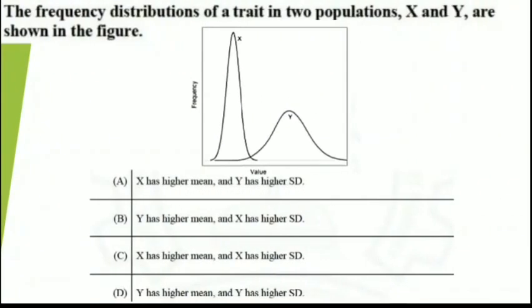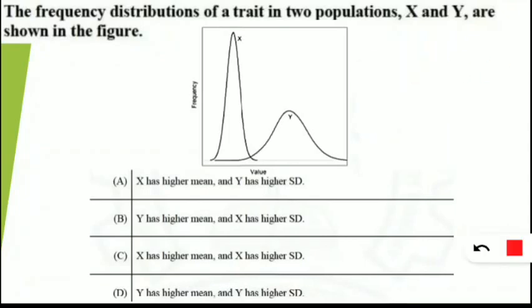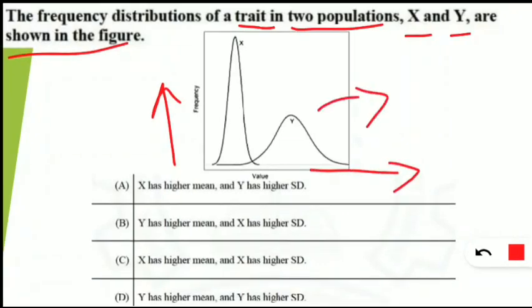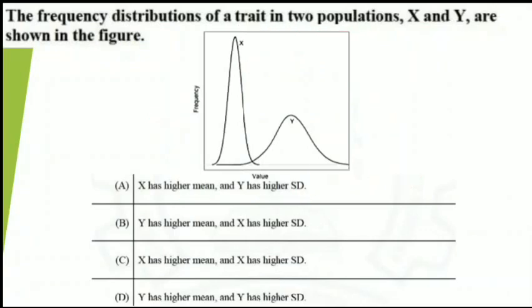The next question involves a graph showing the frequency distribution of a trait in two populations, X and Y. Frequency is on the Y-axis and trait value is on the X-axis. You need to determine which population has the higher mean and which has the higher standard deviation. Take a moment to think about the answer before the correct option is revealed.